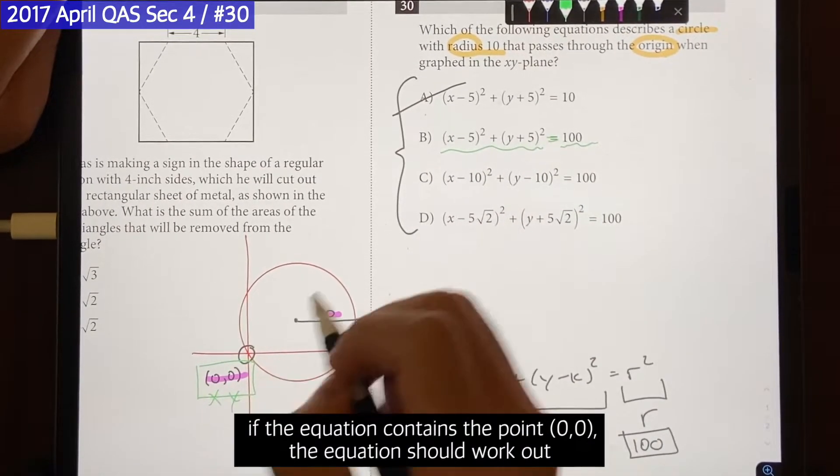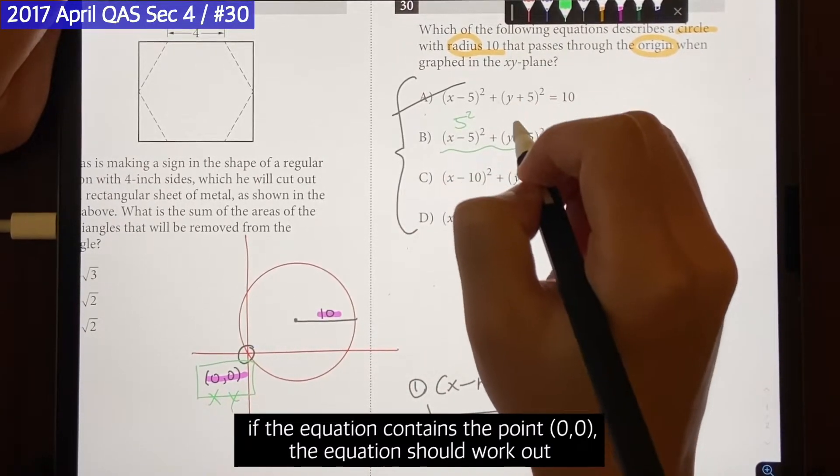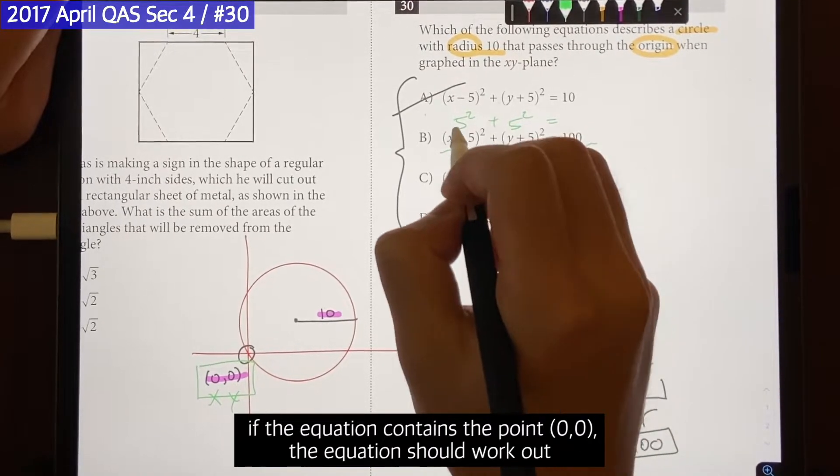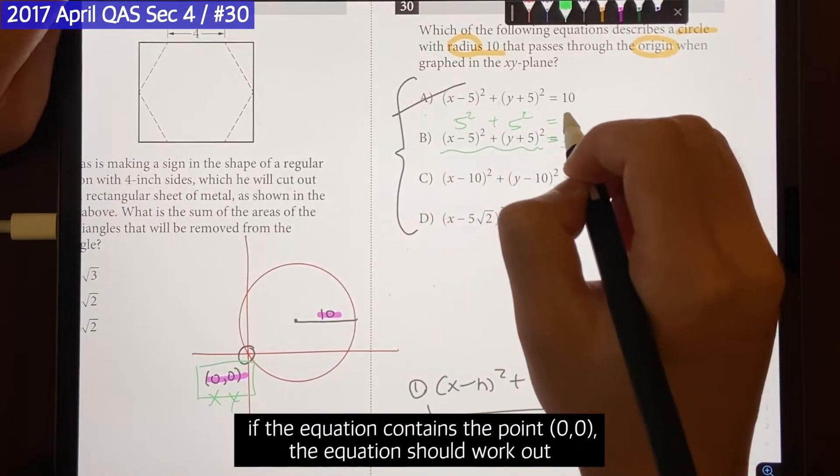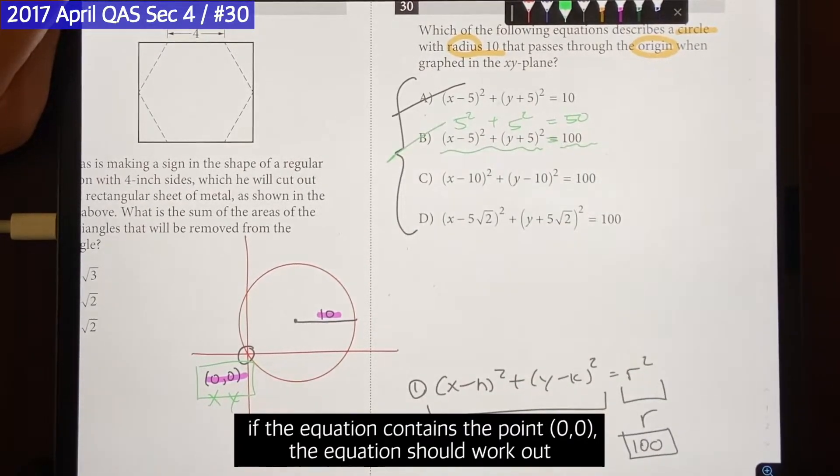When x is 0 it's going to be (0 - 5)^2 plus (0 + 5)^2. And that should equal 100 but 5 squared is 25 plus 25 is going to be 50. So 50 doesn't equal 100 which means choice B is the wrong equation and it doesn't contain this point.